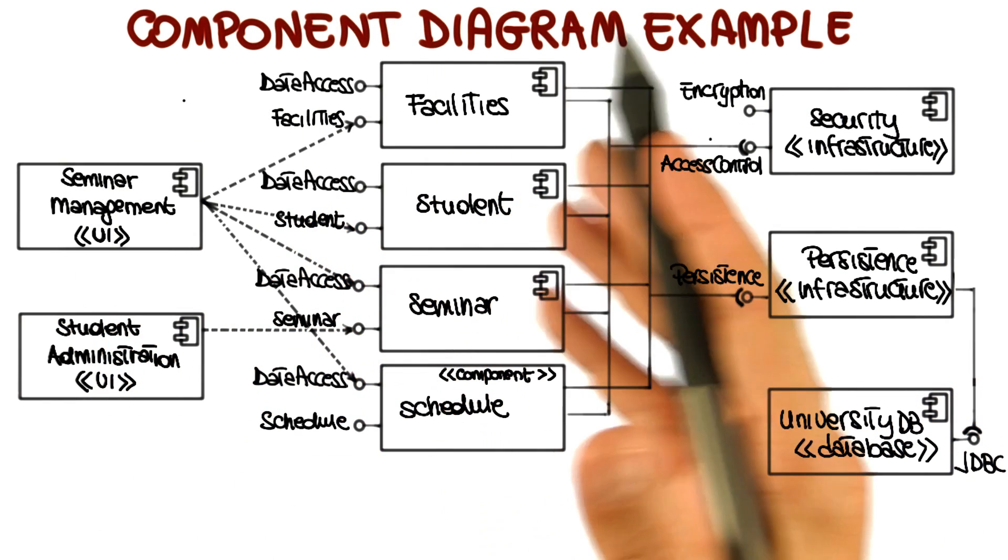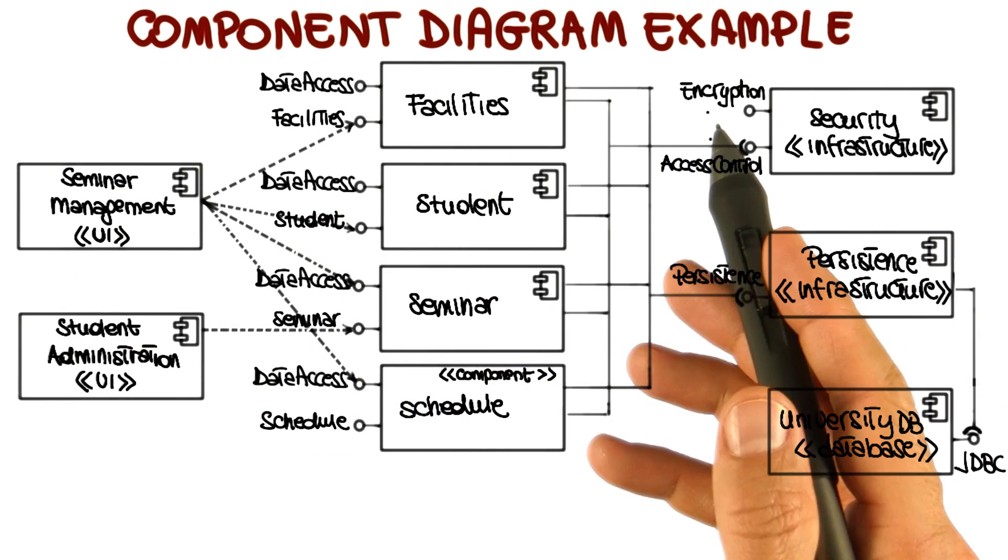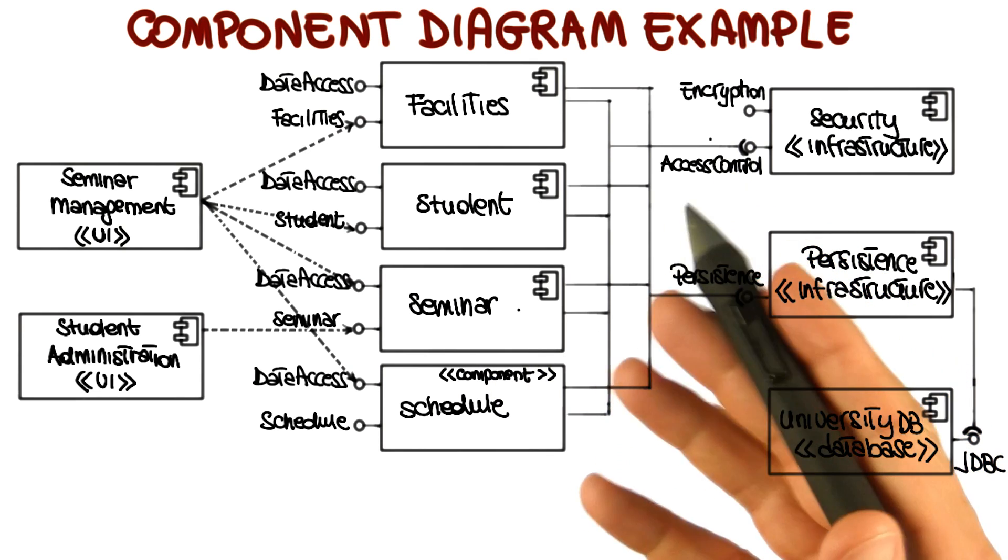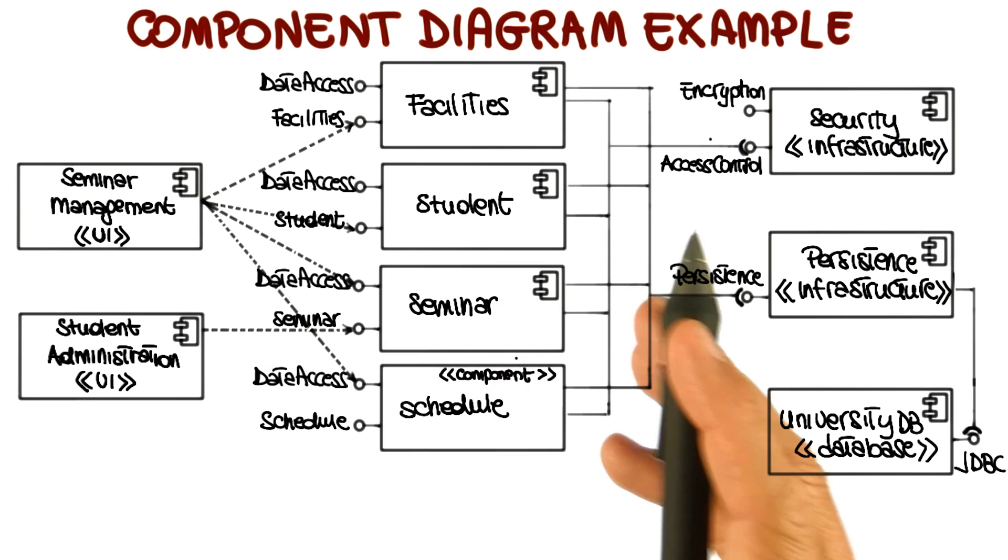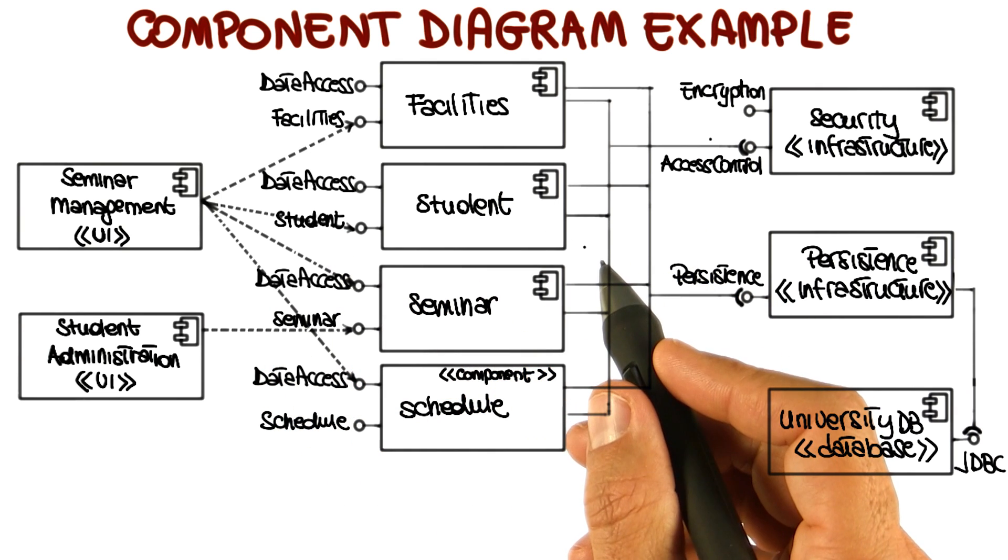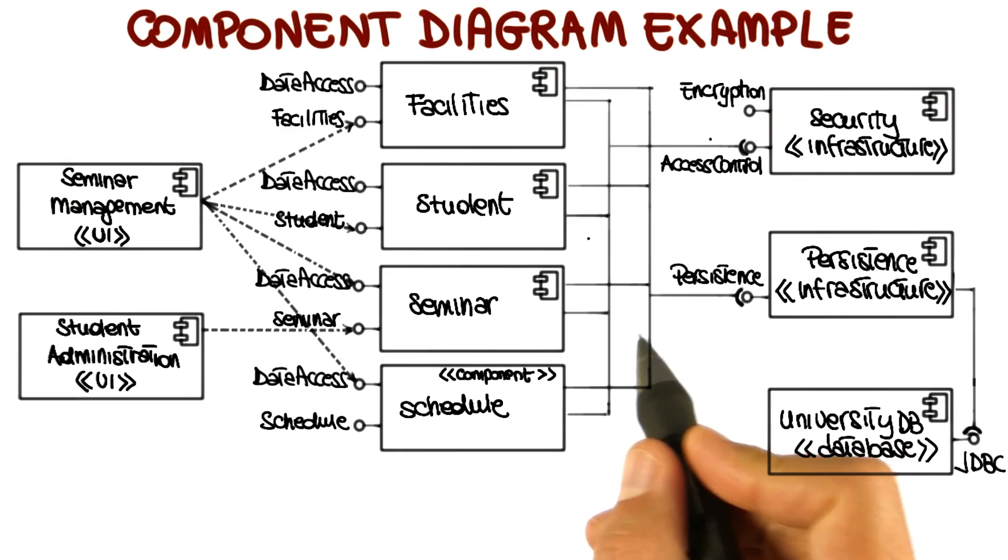So let's illustrate this with an example. What I'm representing here is a component diagram for our example system, the course management system. As you can see, it's slightly more complex than the other diagrams that we saw, but there's really no need to go through all the steps and all the details. The important thing is to point out some key aspects of this diagram.